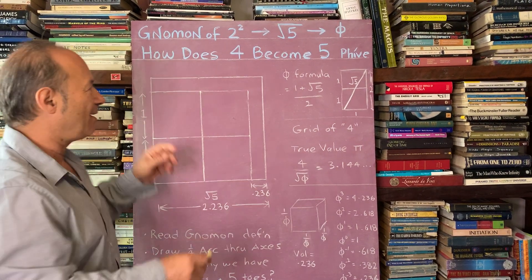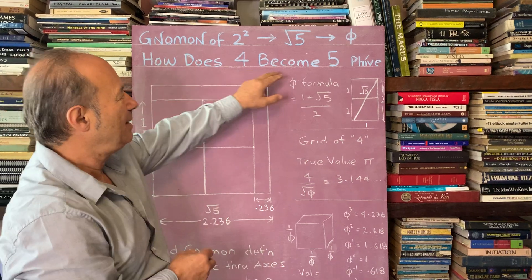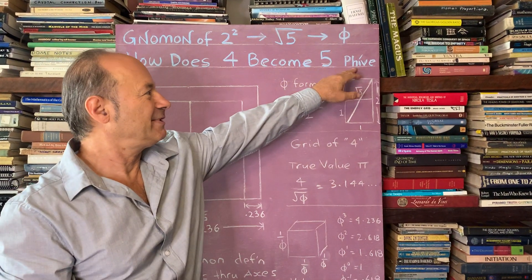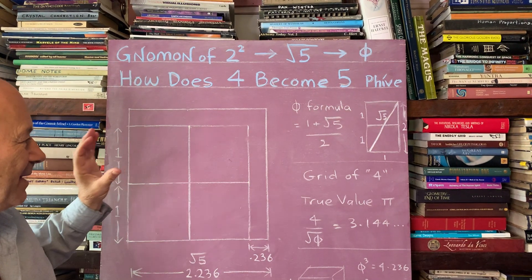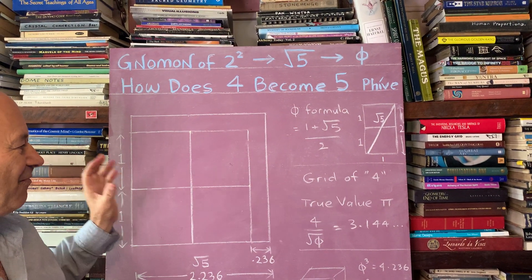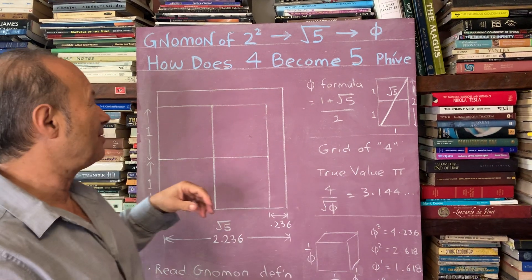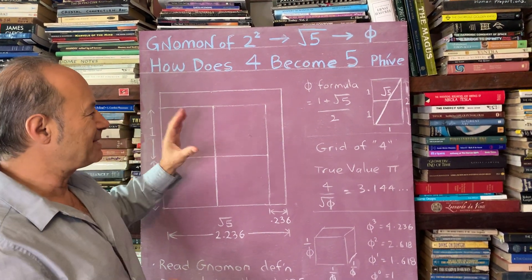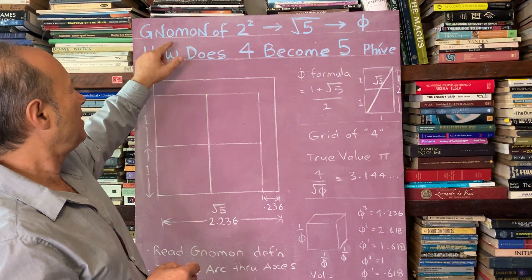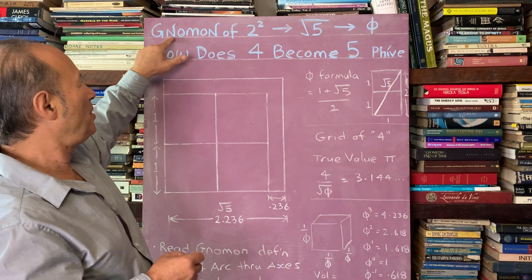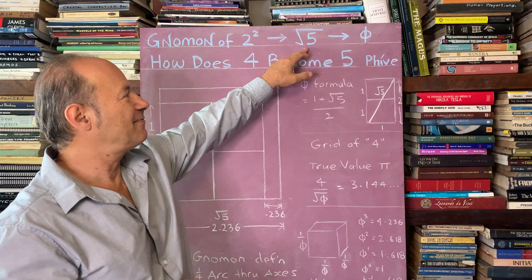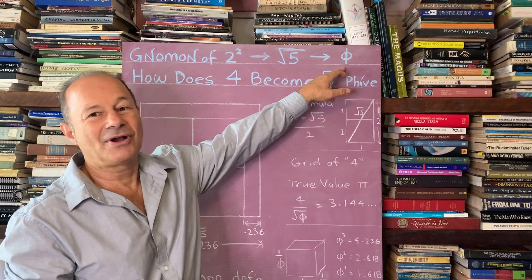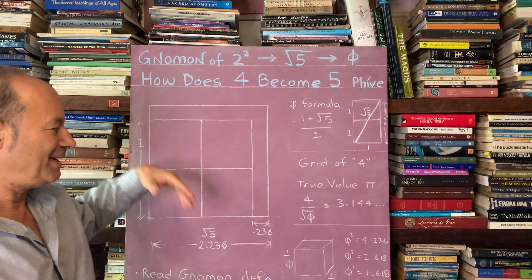I'm calling this, how does 4 become the number 5? And I've written the number 5 with the golden ratio symbol, because you're going to see that this very transformation from 4 becoming 5 involves the golden ratio. To understand how this is done, we're going to learn about a new word called the gnomon of 2 times 2, how it creates root 5, which is part of the golden ratio formula.